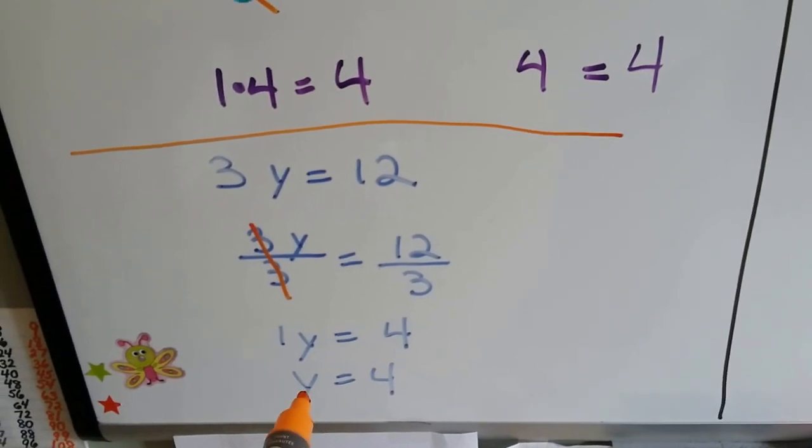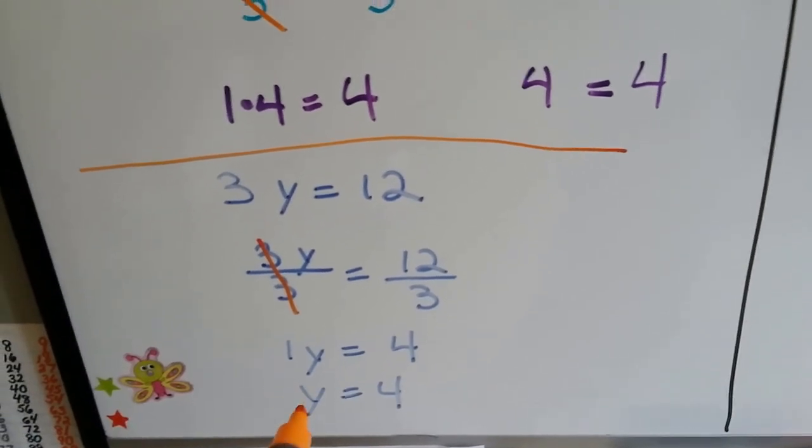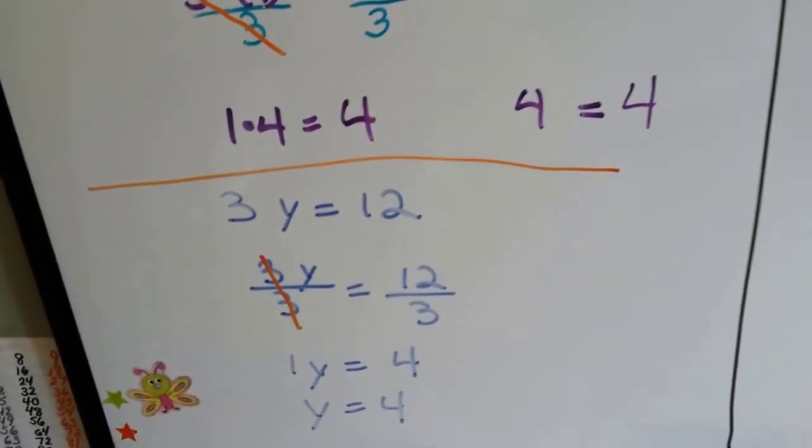And we don't need to write the 1 in front of the y. We know there's only one y here. Whenever you see a variable by itself, we know there's a 1 in front of it.